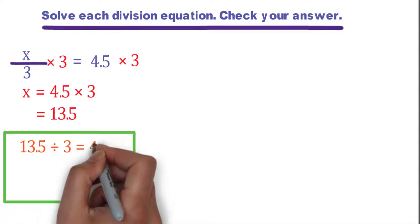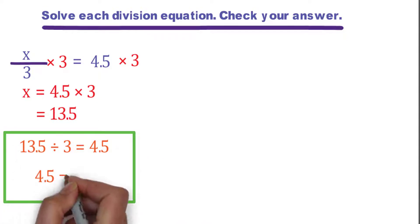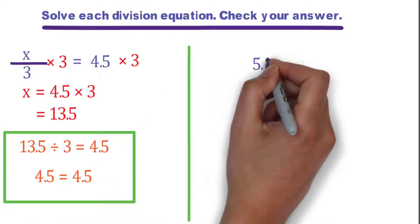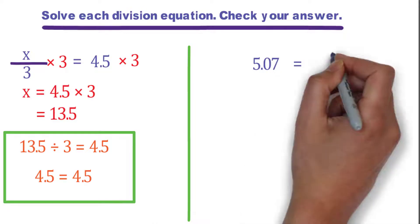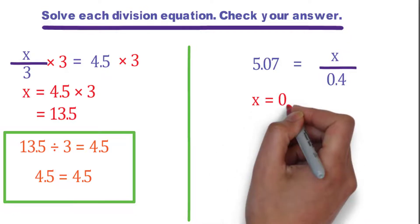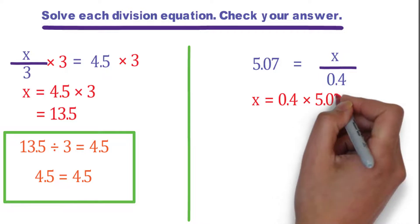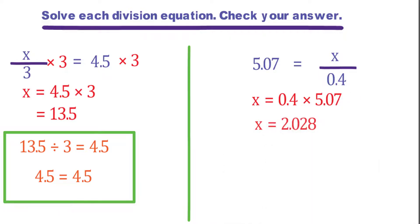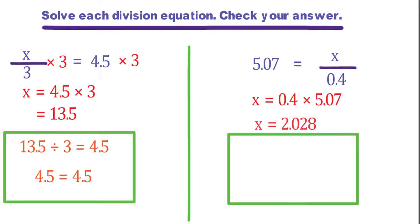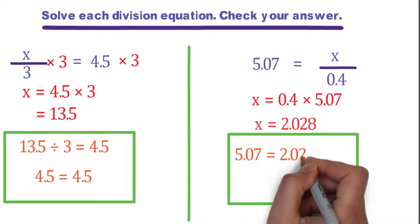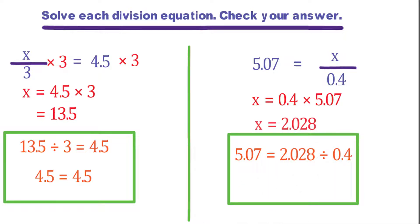Now 13.5 divided by 3 equals 4.5. We get 4.5 equals 4.5 — the two sides are the same. Next: 5.07 equals x over 0.4. Multiply both sides by 0.4. We get x equals 0.4 times 5.07, so x equals 2.028. To check your answer, substitute for x equals 2.028: 5.07 equals 2.028 divided by 0.4.